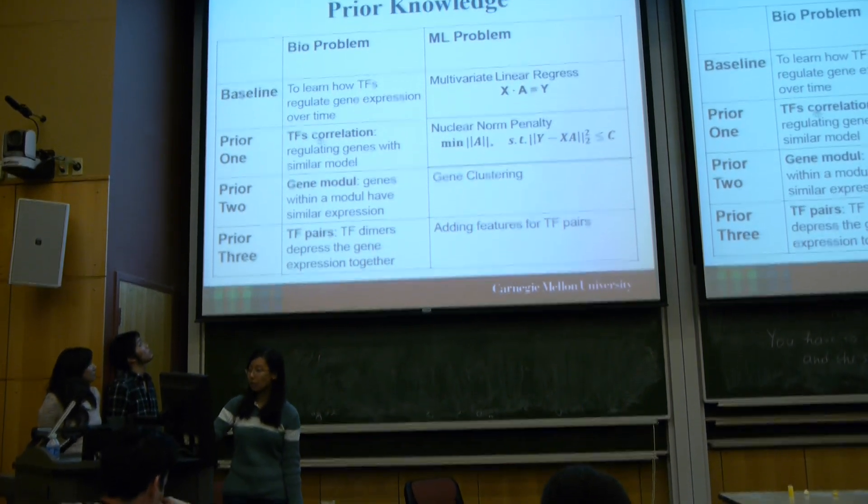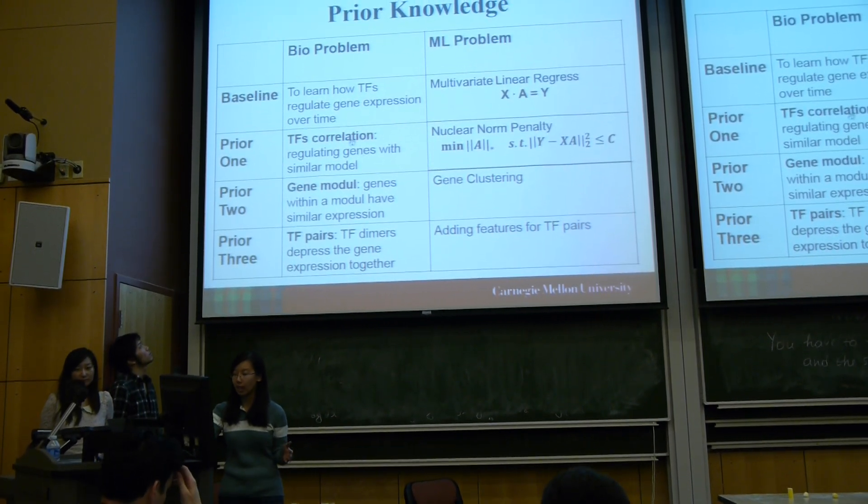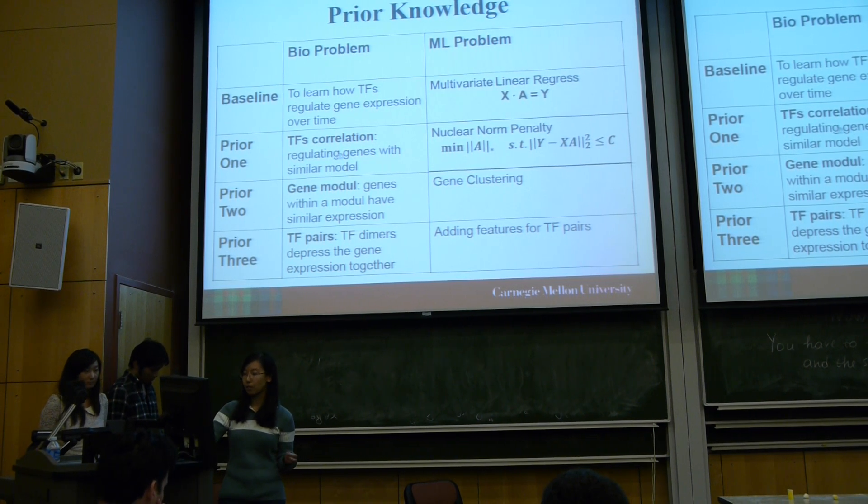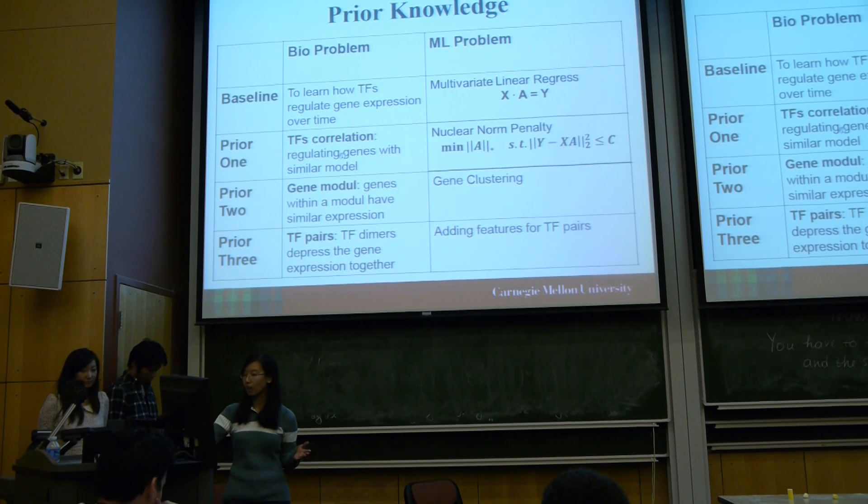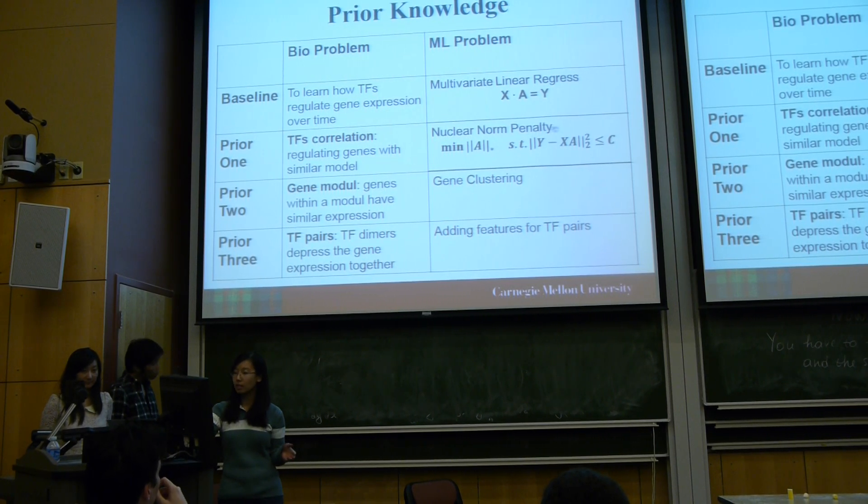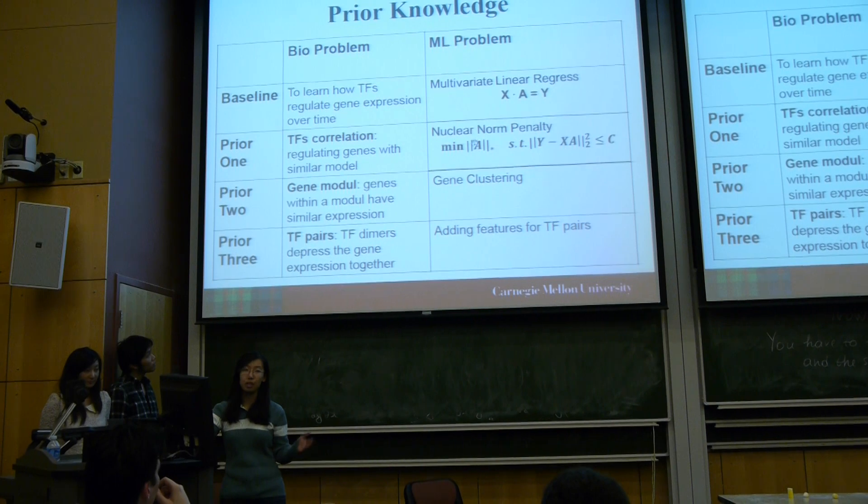The first prior uses transcription factor correlations. Transcription factors always regulate gene expression with similar models. So we implement a nuclear norm penalty in our equations and do this optimization.